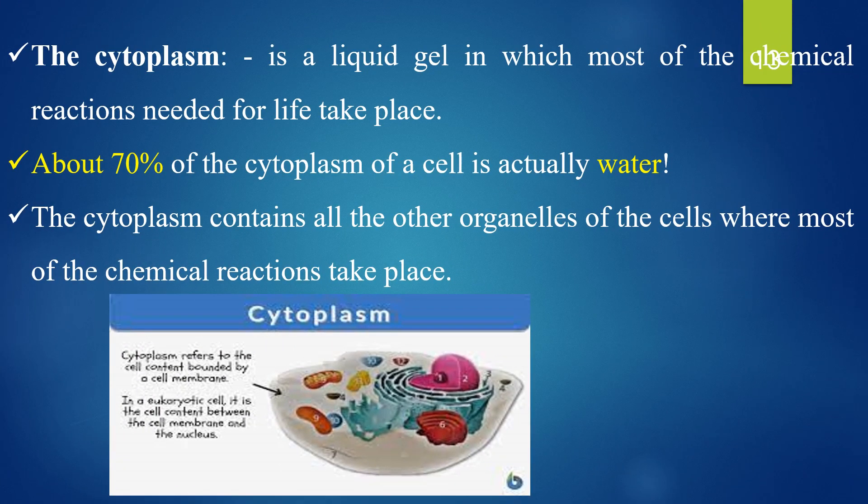Cytoplasm is a liquid gel-like substance in which most of the chemical reactions used for life take place. About 70 percent of the cytoplasm of the cell is actually water. The cytoplasm contains all other organelles of the cells where most chemical reactions take place. It refers to the cell content bounded by the cell membrane — a fluid-like gel where reactions occur.